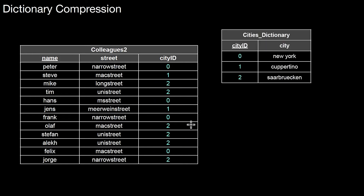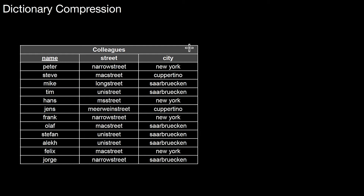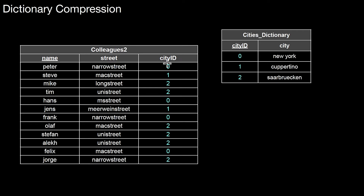What do we do? We basically create another table — let's call it the cities dictionary. Here we collect all the cities that appear in the table. Those were only three cities: Saarbrücken, New York, and Cupertino. Then we replace the table colleagues with another table called colleagues2 and change the city attribute to collect foreign keys to this dictionary table. The foreign key city ID points to the primary key city ID in the cities dictionary, forcing the database to store only IDs in that column rather than strings.